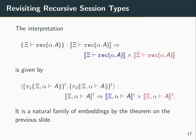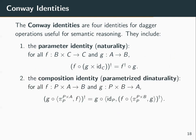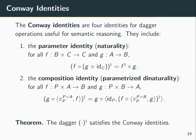Our goal is always to reason about programs and interpretations of session types, and the Conway identities are useful for doing so. The Conway identities are four identities for dagger operations that include the parameter identity and, for example, the composition identity, which gives us parametrized dinaturality. As a corollary of our results and work by Bloom and Esik on dagger operators for traced Cartesian closed categories, we have as a new theorem that the dagger operator satisfies the Conway identities.